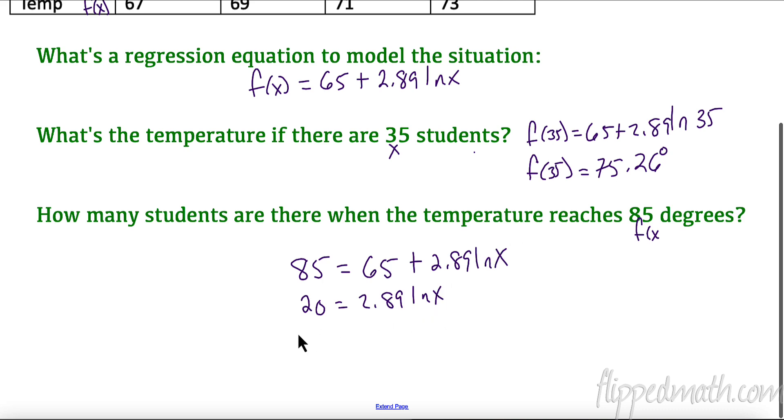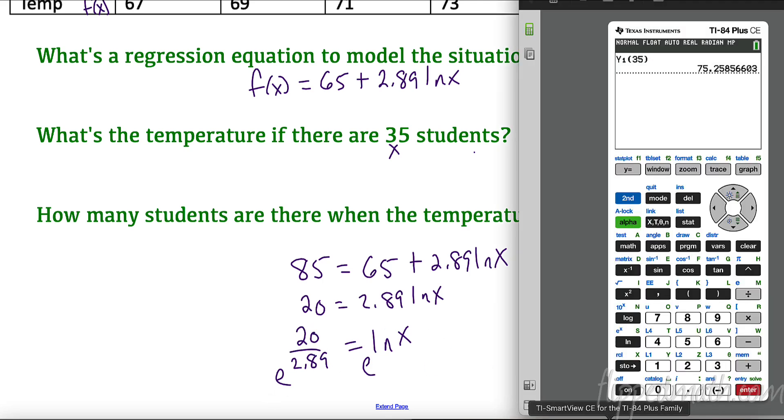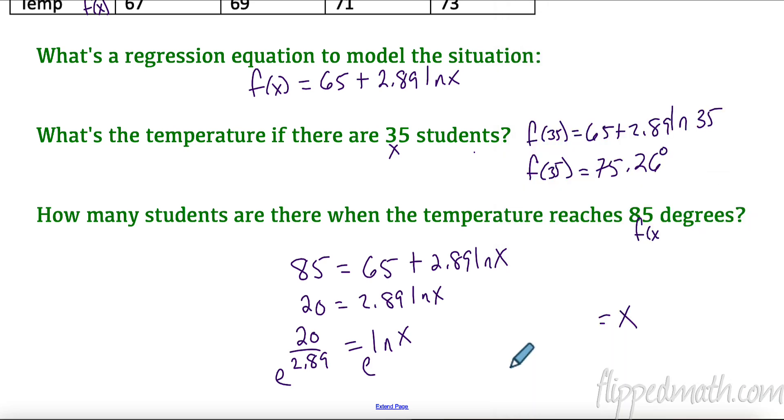And then how do I get rid of the natural log? I have to raise it to the power of e because those are the same, they're going to cancel. So now I have x = e to the 20 over 2.89, and the reason I did this, now I can put that in right here. I don't have to round it. The less you round the better. So I got 1012.74 students or let's say 1013 students. So luckily for me I'm not going to have that situation so I won't have to get to 85 degrees.